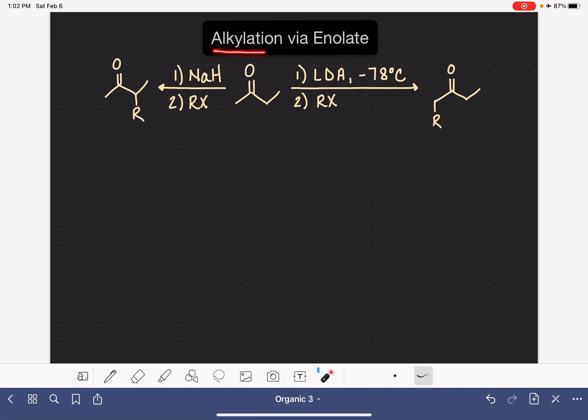It is possible to put an alkyl group onto the alpha carbon of a carbonyl compound by first converting the carbonyl compound into an enolate and then performing an SN2 reaction using that enolate as a nucleophile.